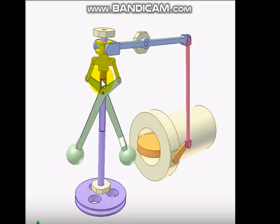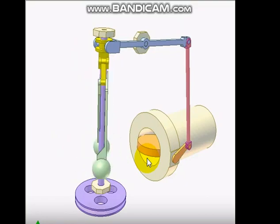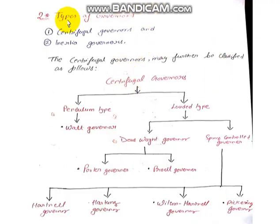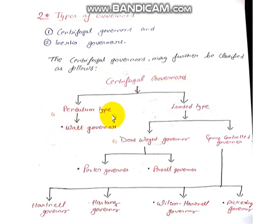So this is how the governor works — when speed increases the valve closes, and when speed decreases the valve opens. Now, how many types of governors are there? There are mainly two types: centrifugal governor and inertia governor. We will discuss the centrifugal governor first — we will understand its derivation and some numerical problems.